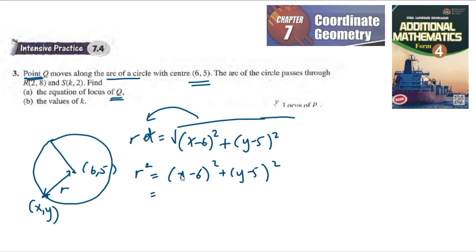If we expand this, we get x² - 2 times 6 times x is -12x, plus y² - 10y, and then 36 plus 25, which is 61.